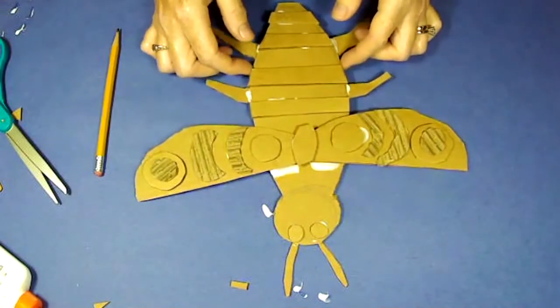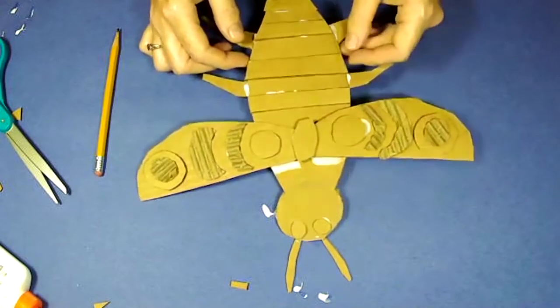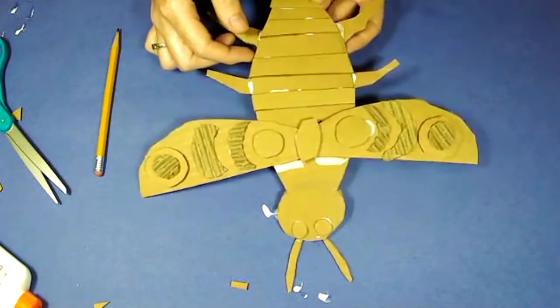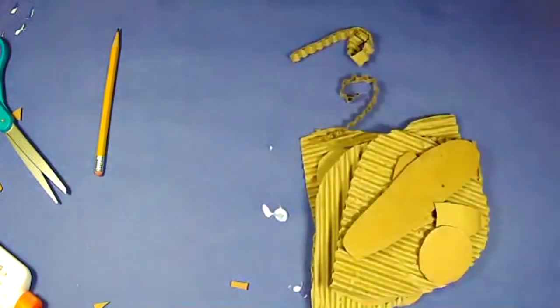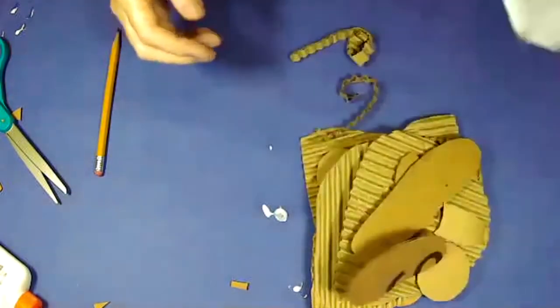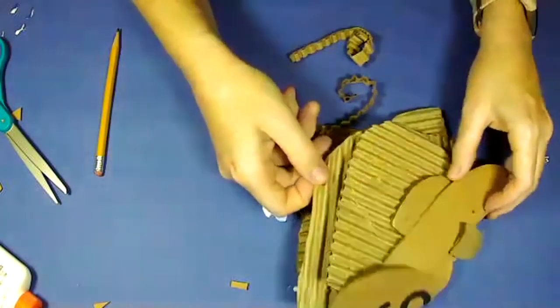All right. So we're going to carefully set Mr. Bug to the side. Okay. Stay together. All right. And now I'm going to show you how to make this butterfly. A butterfly is bigger, but it has less pieces. So let's see what I have here for a beautiful butterfly.